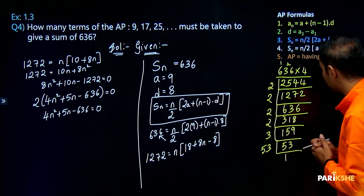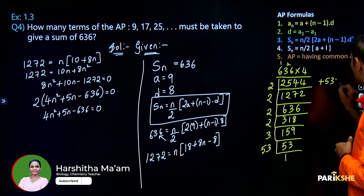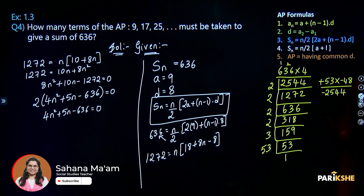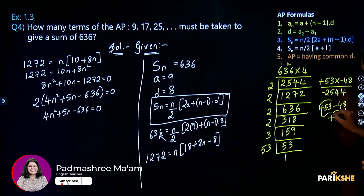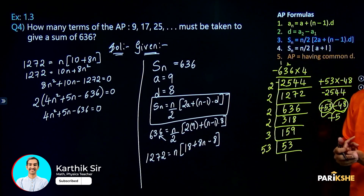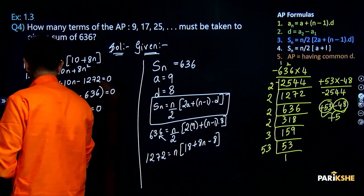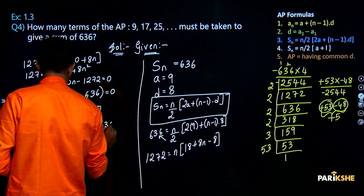So the split gives plus 53n minus 48n for the middle term. Therefore: 4n squared plus 53n minus 48n minus 636 is equal to 0. Now taking common factors: from first two terms, n is common giving n(4n + 53), and from last two terms, 12 is common giving 12(4n + 53).